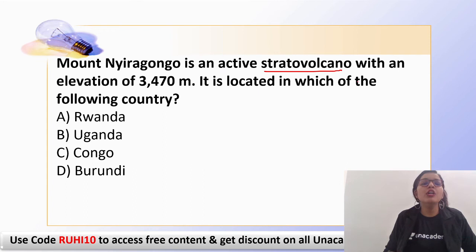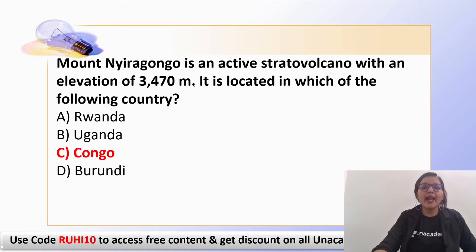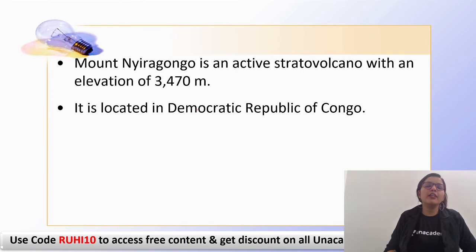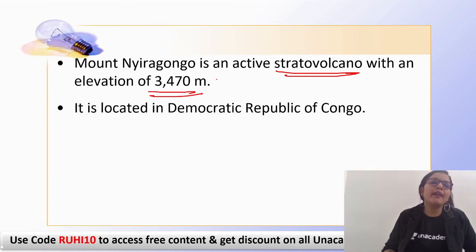The next question: Mount Nyiragongo is an active stratovolcano with an elevation of 3,470 meters. It is located in which country? The correct answer is Congo — specifically the Democratic Republic of Congo. Remember it is an active stratovolcano with an elevation of 3,470 meters, located in the Democratic Republic of Congo.